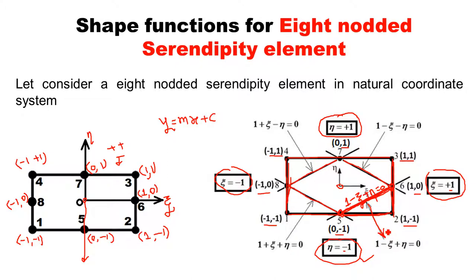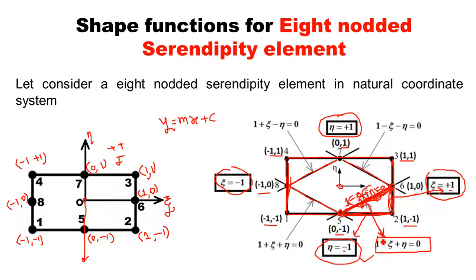Understand the logic: to write the equation of the inclined line, identify the two edges (horizontal and vertical) it connects to. Take the opposite signs of those edge coordinates, and form the equation as 1 minus xi plus eta = 0. This is the equation of this inclined line.